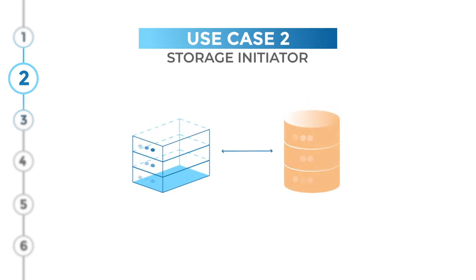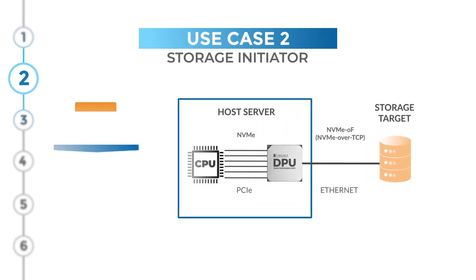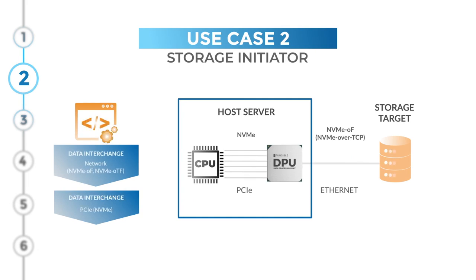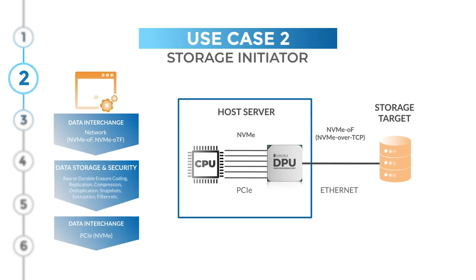The Fungible DPU can also be integrated into host servers, serving as a bare metal NVMe over Fabrics storage initiator. It translates NVMe to NVMe over Fabrics, making NVMe remote storage appear local to the host servers, and executes data services such as end-to-end encryption and compression for more efficient network bandwidth utilization.